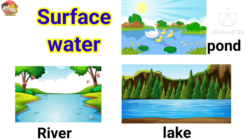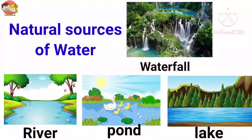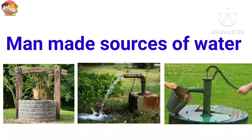Surface water sources are found on the earth's surface, like rivers, ponds, lakes, streams, and waterfalls. Rainfall, waterfall, pond, river, lake, and stream are natural sources of water. Well, tube well, and hand pump are man-made sources of water.